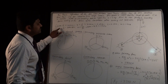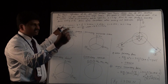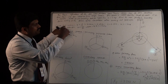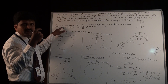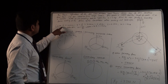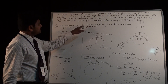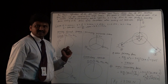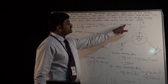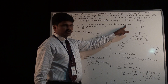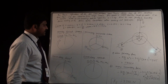Now let us write the given data. The stroke is given — crank radius is not directly given, so stroke equals 2 times the crank radius. Stroke is 100 mm, so radius of the crank is 50 mm, that is equal to 0.05 meter. Length of the connecting rod is given. Mass of the reciprocating parts is 1.5 kg. Speed is given, so angular velocity is calculated.